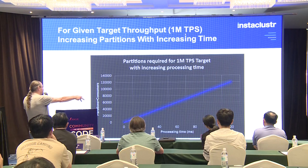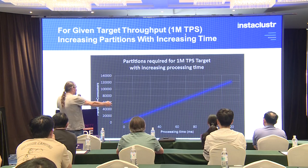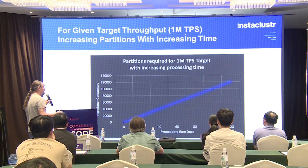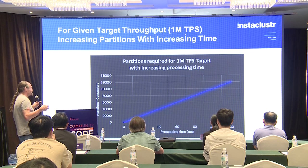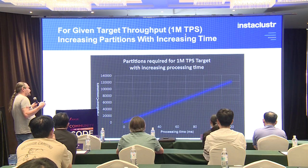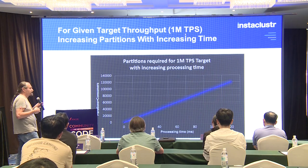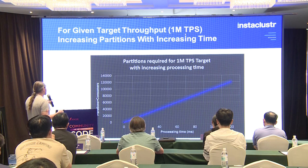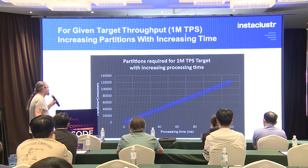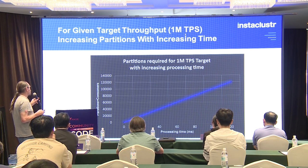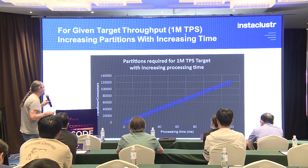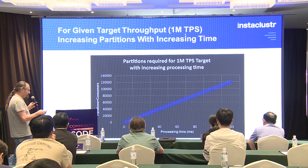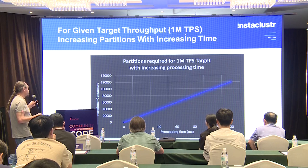For example, if the processing time is 100 milliseconds — quite long in Kafka terms, but possible if the consumer is talking to a database — then you'll need around 100,000 partitions to achieve the one million TPS target throughput, which is a lot of partitions.